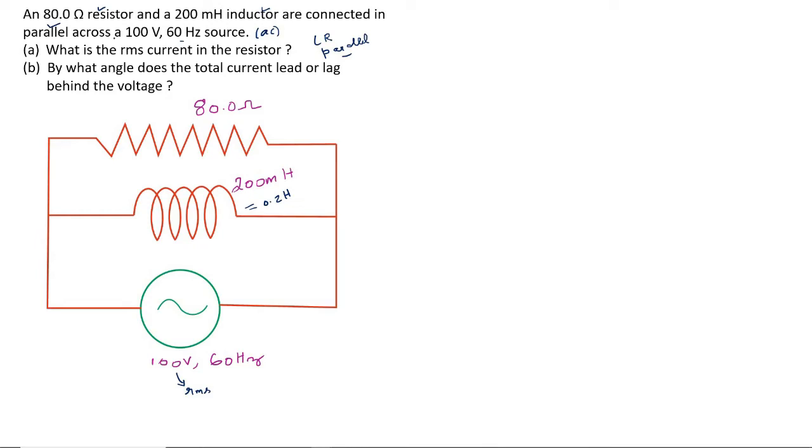What we are supposed to find? RMS current through the resistor. One point has to be noted. All the three are connected here in parallel. So, whatever is the voltage here, that will be the voltage across the resistor. Voltage across the resistor is same as the source voltage. So, directly you can write IRMS as V by R. V by R, 100 by 80, on simplification 5 by 4, 1.25 ampere.